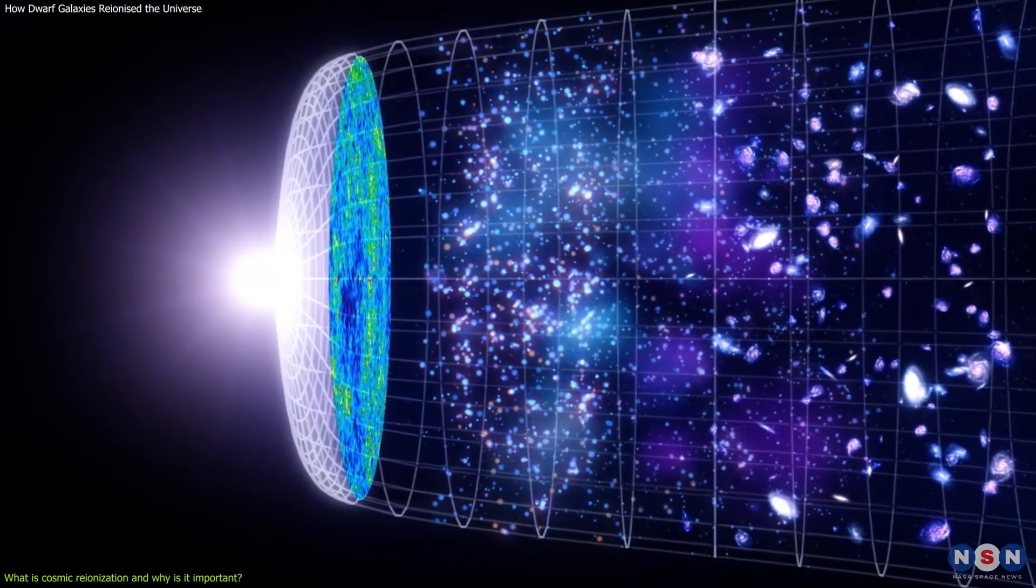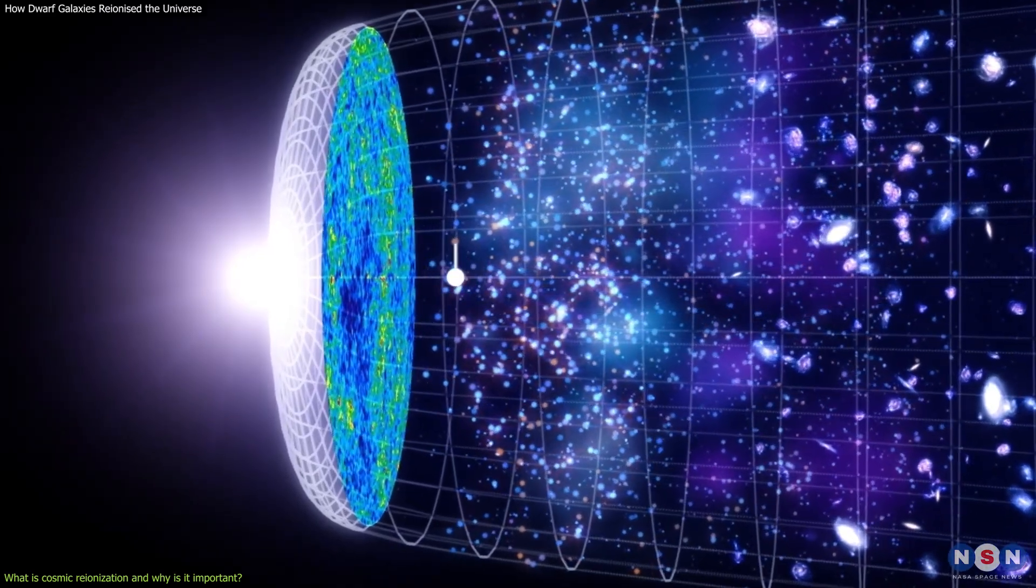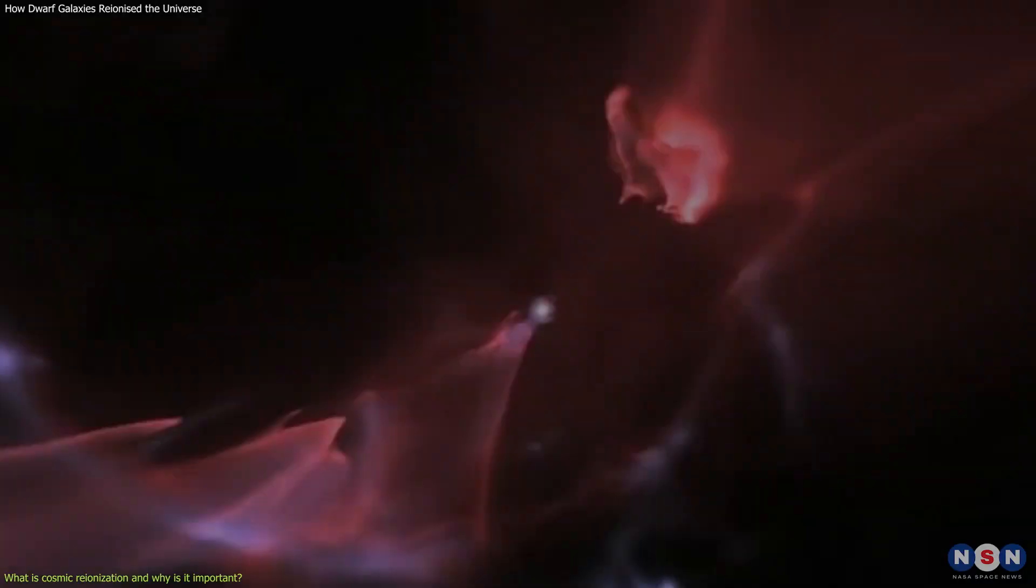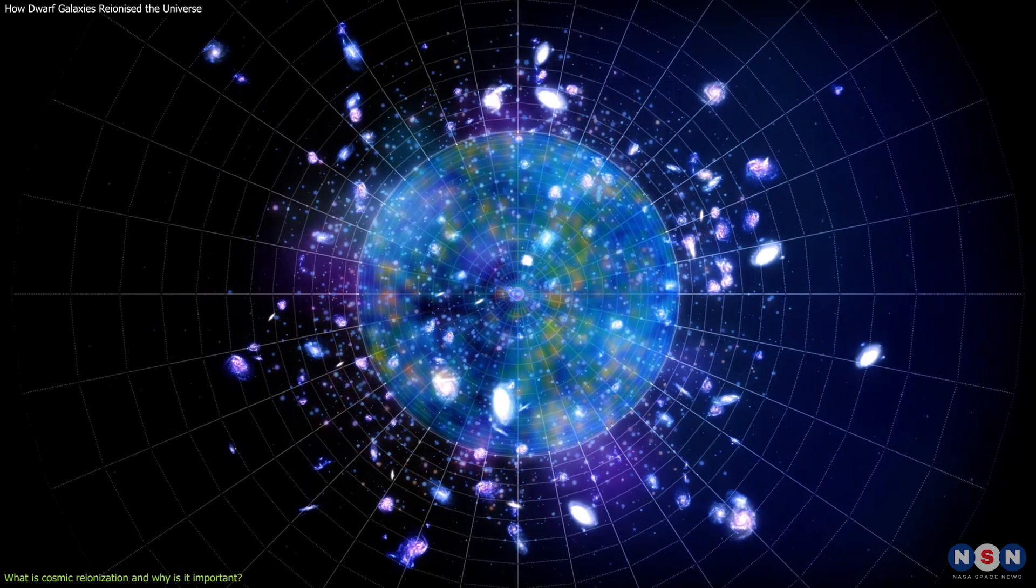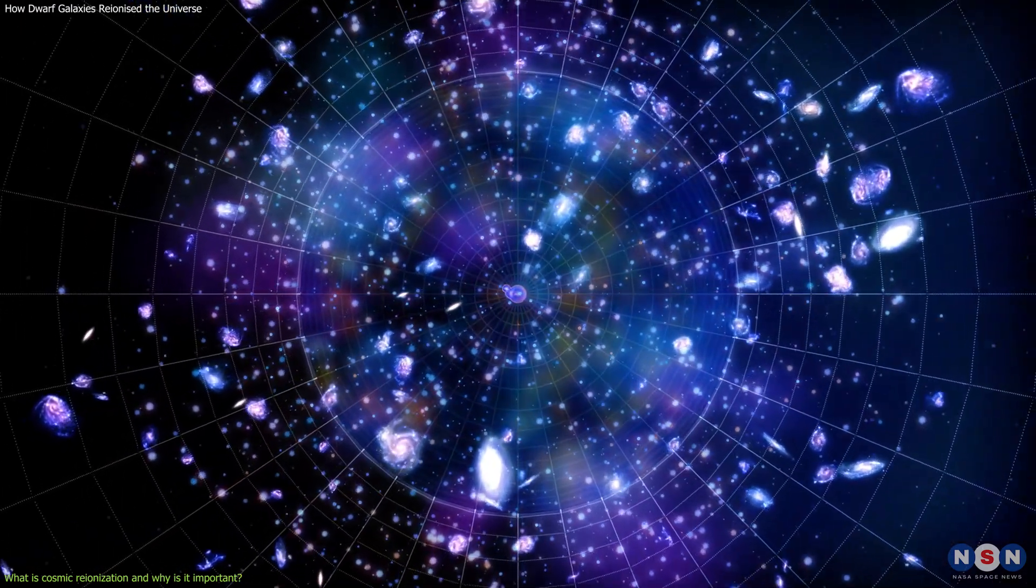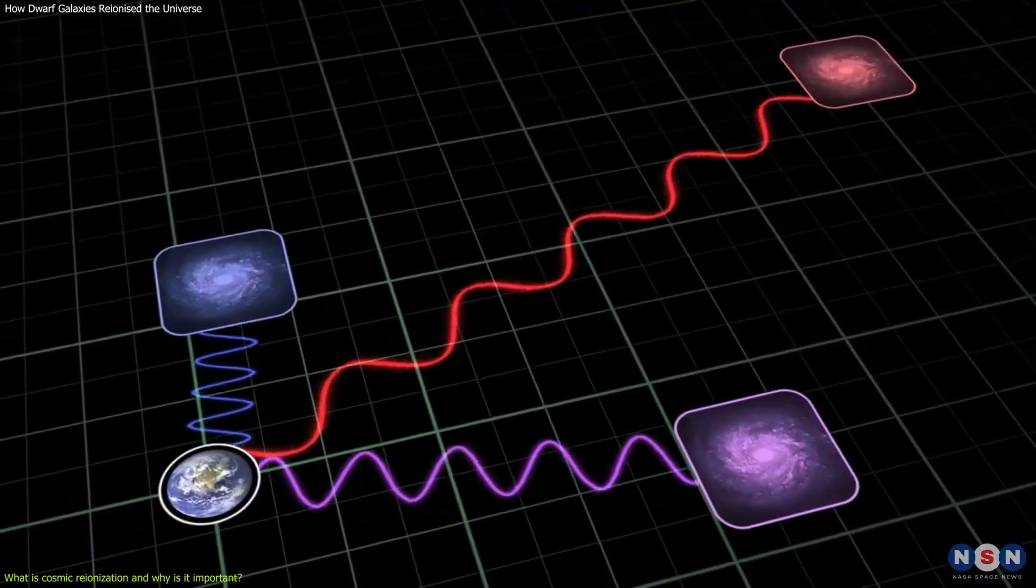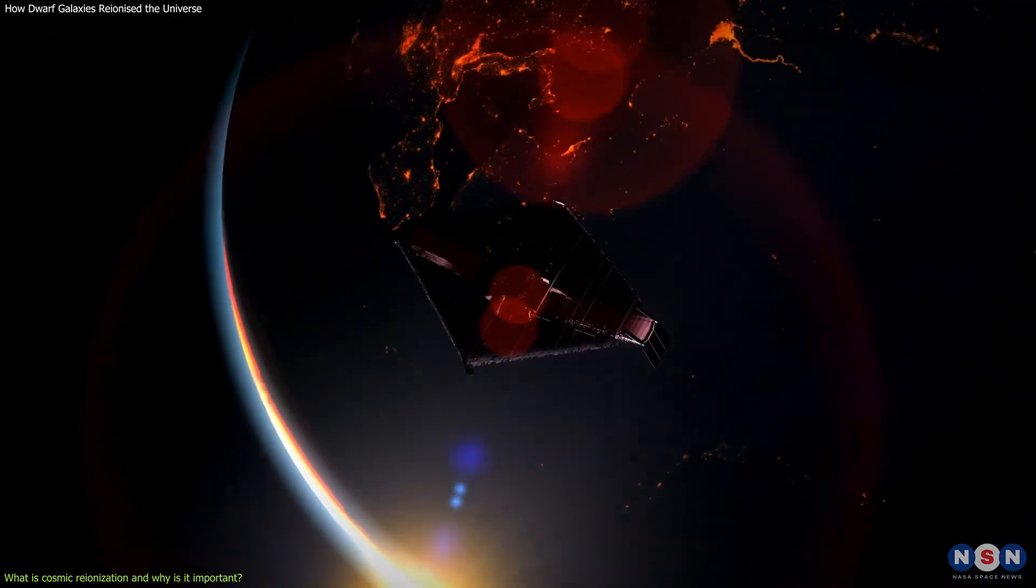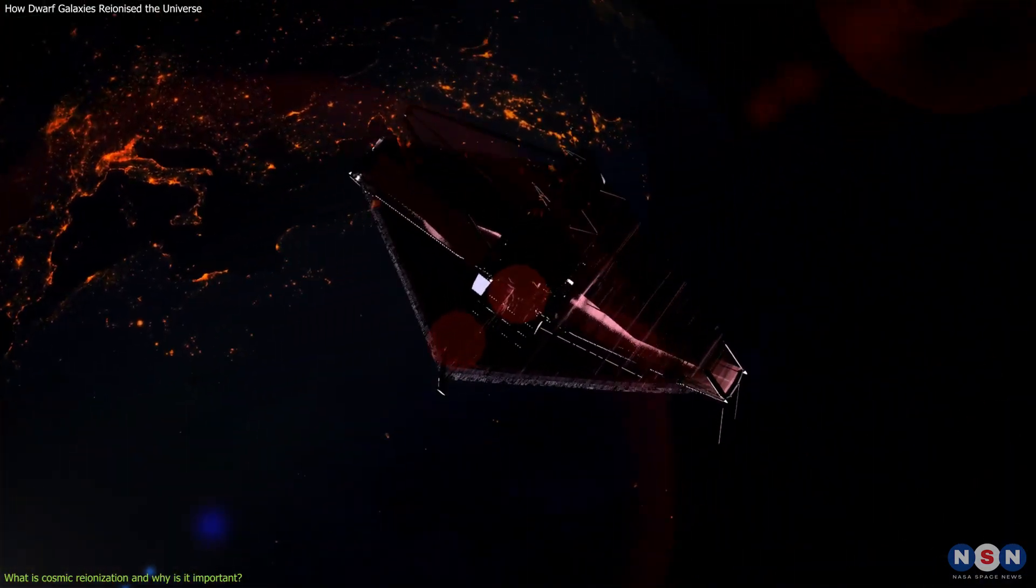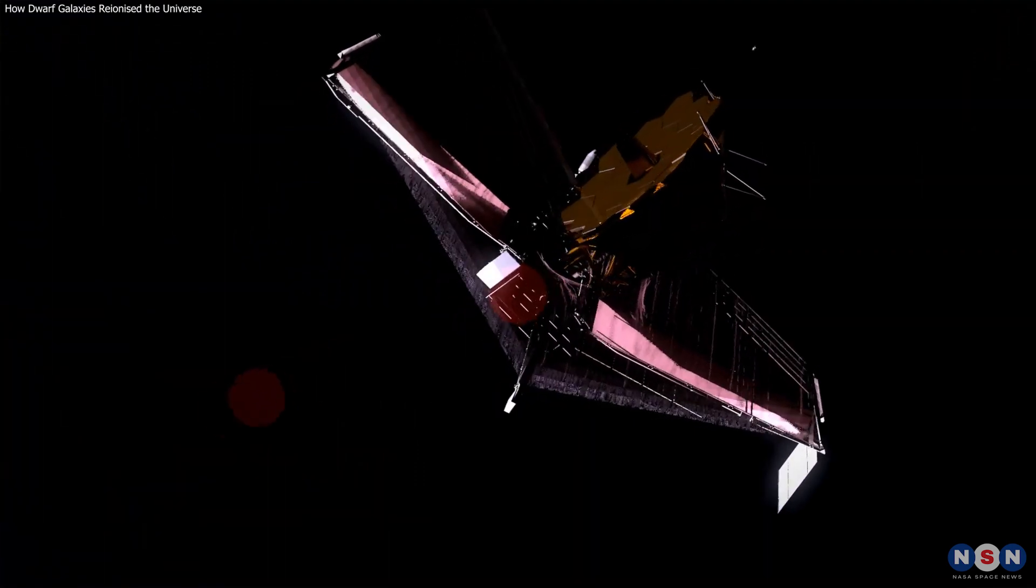However, CMB alone cannot tell us much about the sources of the ionizing radiation, or how they affected the structure and evolution of the universe. For that, we need to look at the light from the first stars and galaxies themselves, which is extremely faint and redshifted due to the expansion of the universe. And this is where the Webb Telescope comes in, as it is designed to detect and study this elusive light.